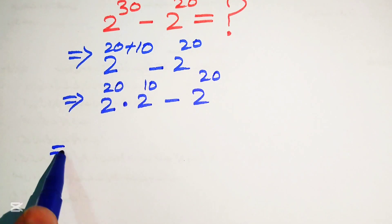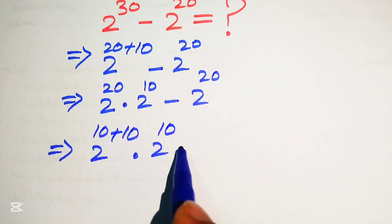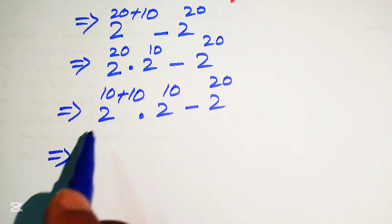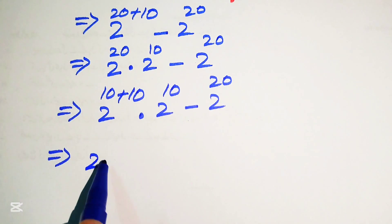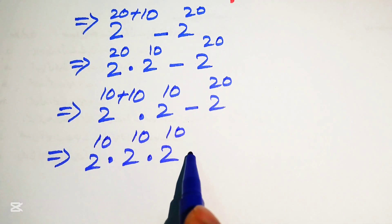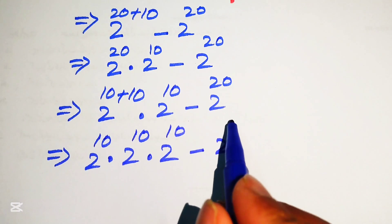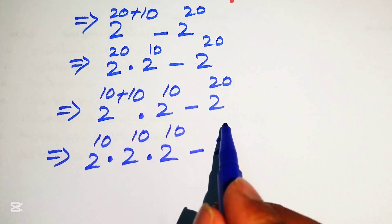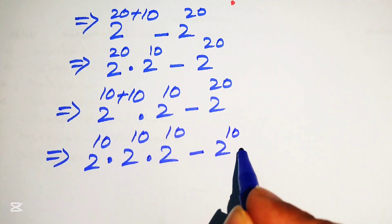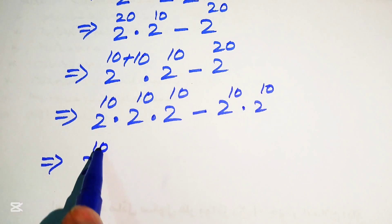In the next step, we again break 2 to the power of 20 and write it as 2 to the power of 10 plus 10, multiplied by 2 to the power of 10, minus 2 to the power of 20. We again apply the exponent law and break this value, writing it as 2 to the power of 10 multiplied by 2 to the power of 10, multiplied by 2 to the power of 10.